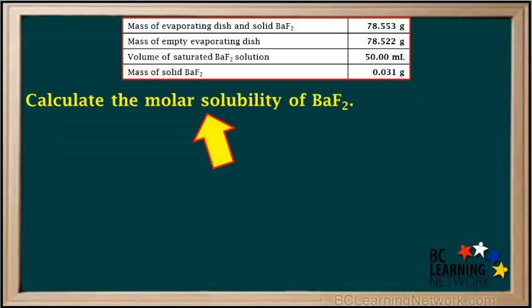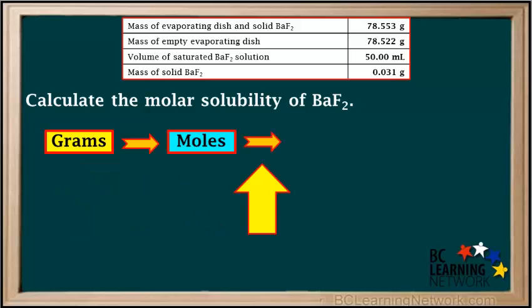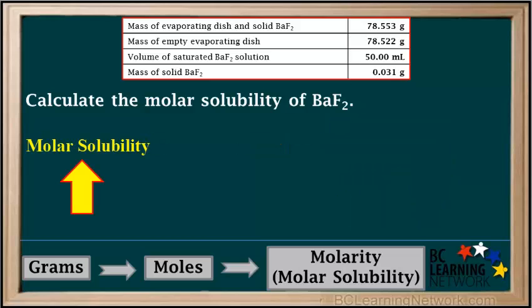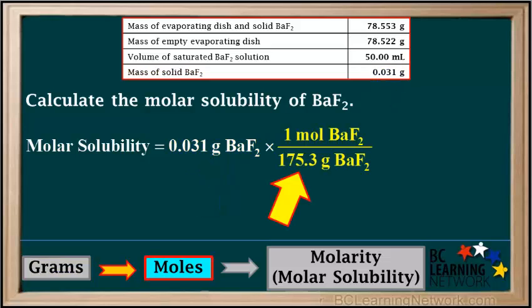Now we have enough information to calculate the molar solubility of BaF₂. We start with the grams of BaF₂, convert to moles, then divide by the volume of our sample in liters to get the molar concentration — which is the molar solubility. We start with the mass of BaF₂, which is 0.031 grams, and multiply by the conversion factor 1 mole of BaF₂ per 175.3 grams of BaF₂, its molar mass. If we stopped here, we could calculate the moles.